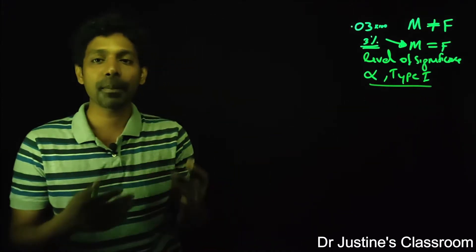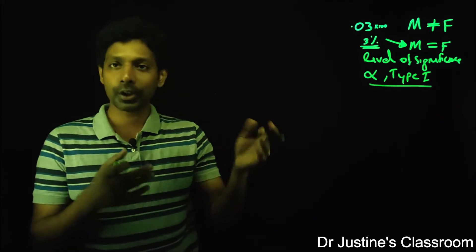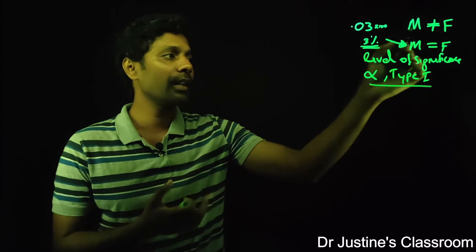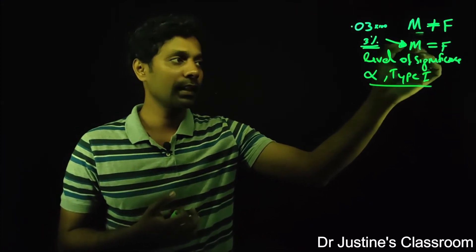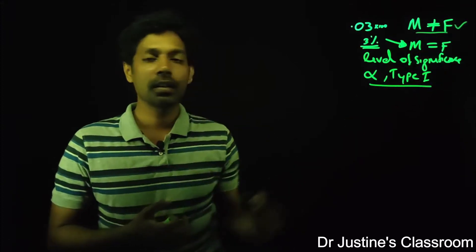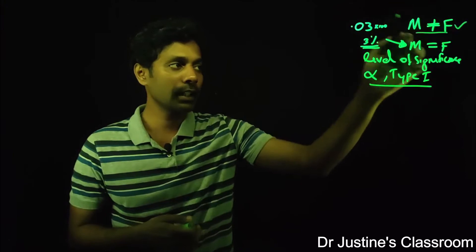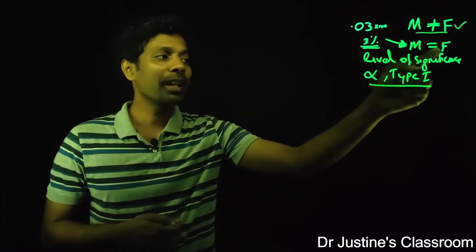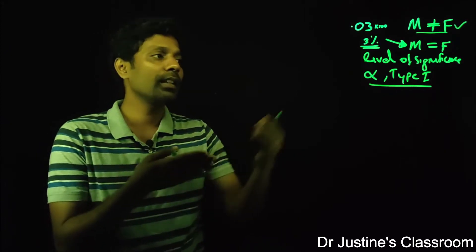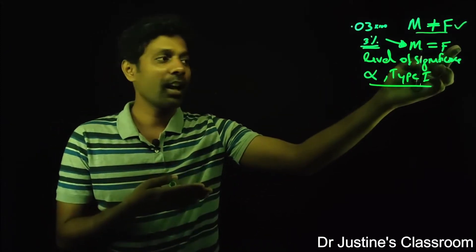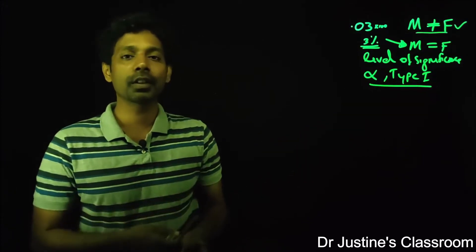The same thing can happen on the other side as well. When two groups are actually not the same — that means when the null hypothesis is false — the other condition is true. It is also possible that the null hypothesis is false, yet you accept the null hypothesis. This is called type 2 error.